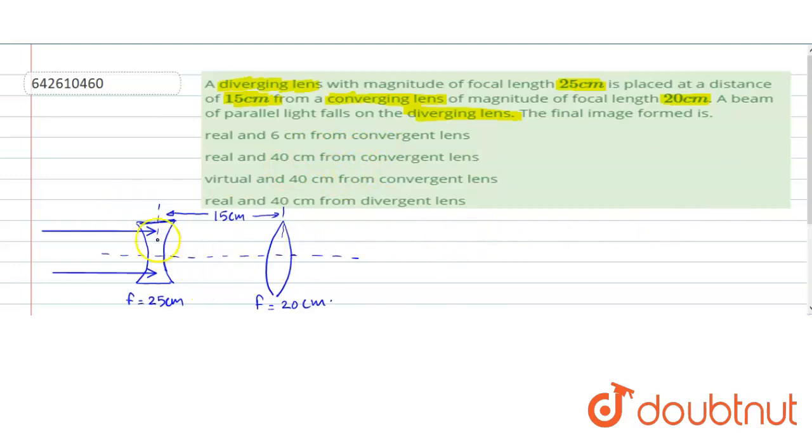So first the image is passing through this diverging lens as it is coming from infinity, right? And it does what? It diverges the image or diverges the incident rays. So after diverging, these rays will meet at its focus.